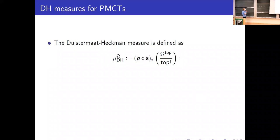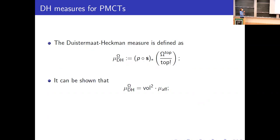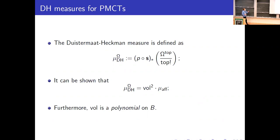The Duistermaat-Heckman measure in this context is defined by pushing forward the Liouville measure on the space of arrows of the groupoid all the way down to the leaf space — all these maps are proper. One of the main results on PMCTs, from PMCT2 by Crainic, Fernandes, and Martinez Torres, is that this Duistermaat-Heckman measure equals vol-squared times mu_f. The square comes from integrating over source fibers twice. Similarly, the vol function is a polynomial on B — very reminiscent of the classical result.